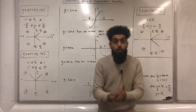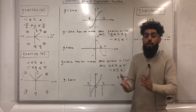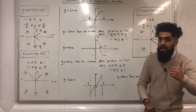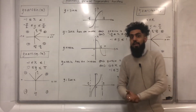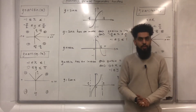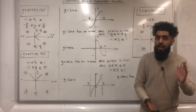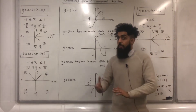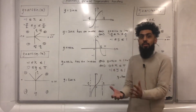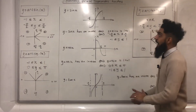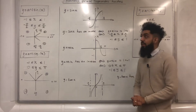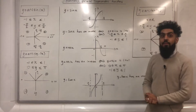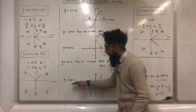Now I'm going to recap a very important rule about the domain and range of the inverse function. The domain of the inverse function is the range of the original function. The range of the inverse function is the domain of the original function. Using this concept we can define the domain and range of the inverse functions of y equals sine x, y equals cos x, and y equals tan x.